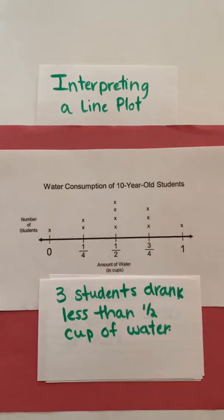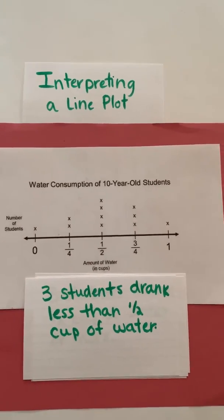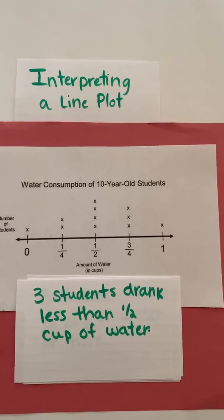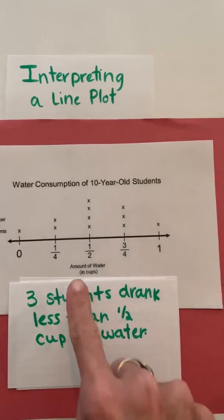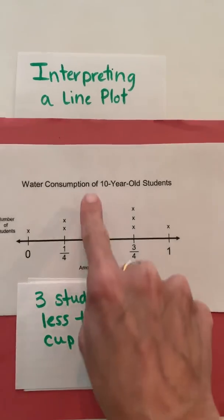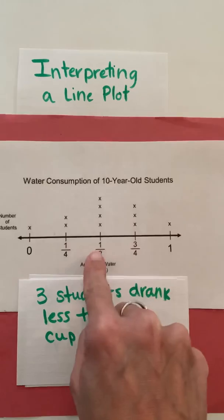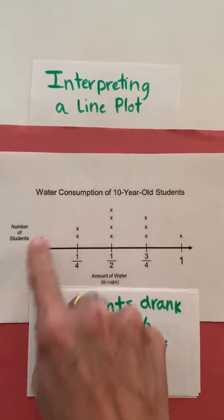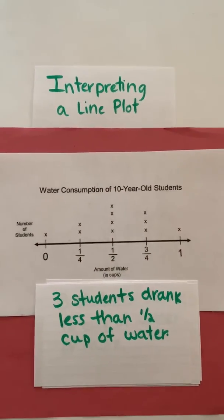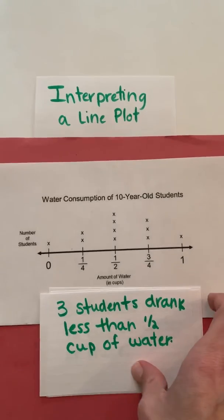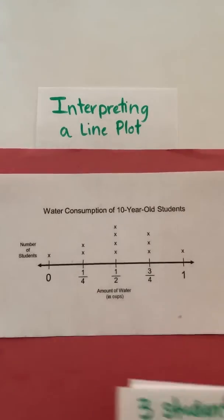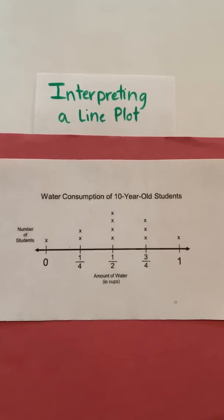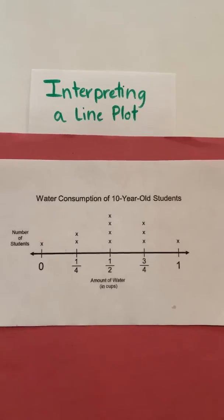Finally, three students drank less than half a cup of water. 'Less than half' means I do not include the half — I include everything below it: one, two, three. There's a lot more information you can gather from this data, but those were just a couple of things I gathered from interpreting the line plot. Now you can try some on your own.